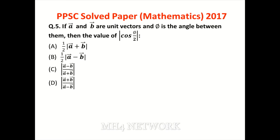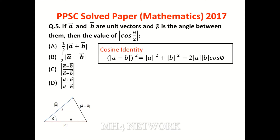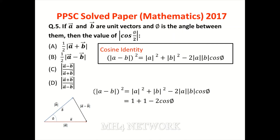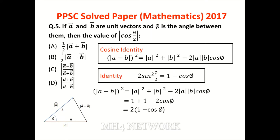Next question: A and B are unit vectors, find the angle between them. Do vectors given hain aur unke beech angle hai. Diagram mein A vector bottom pe aur B vector upar rakhein. A minus B vector generate kar sakte hain. Generalized Pythagoras theorem — cosine rule ya cosine identity — ko vector expression mein use karein. A aur B unit vectors hain isliye magnitudes 1 hain, aur trigonometric identity 1 minus cosine theta ko use karte hain.